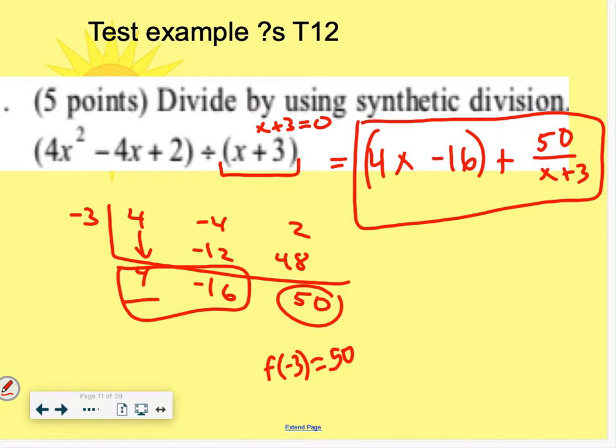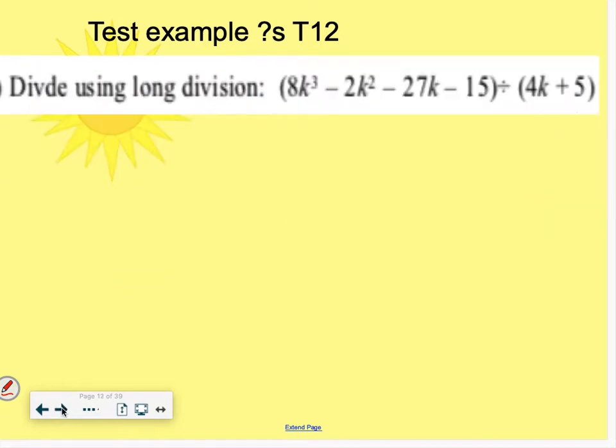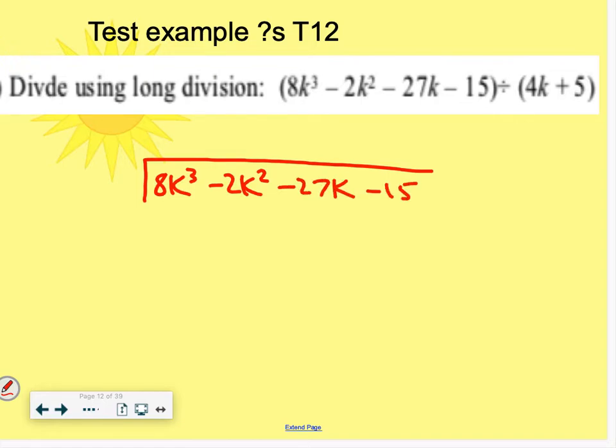Now for the second one, I've told you you can't use synthetic division for this. You actually can, but I specified here to use long division, and you do need to know long division. So make sure you have the work for this one with long division. So I'm putting the dividend underneath the division bar here, and the divisor, 4k plus 5, goes outside.